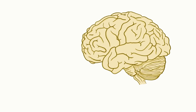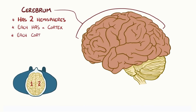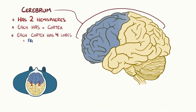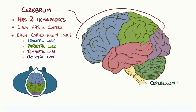The brain has a few regions. The most obvious is the cerebrum, which is divided into two cerebral hemispheres, each of which has a cortex — an outer region divided into four lobes including the frontal lobe, the parietal lobe, the temporal lobe, and the occipital lobe. There are also additional structures including the cerebellum, which is down below, as well as the brain stem, which connects to the spinal cord.